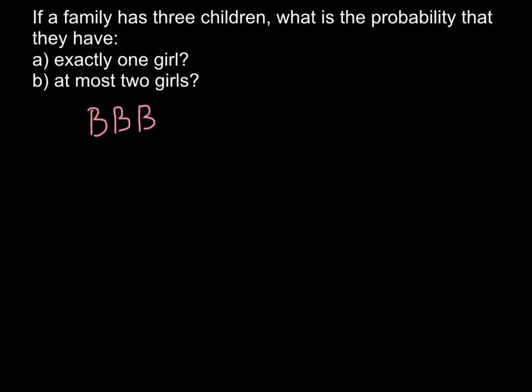Another variant can be when there are two boys and one girl. This can be boy, boy, and girl. Another variant can be boy, girl, boy. And another variant is when the first child is a girl, and then boy and boy.